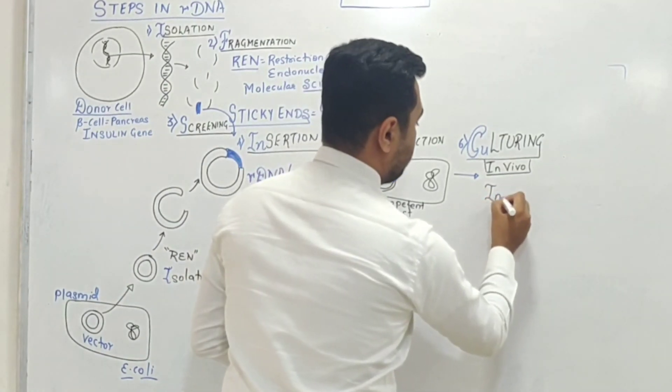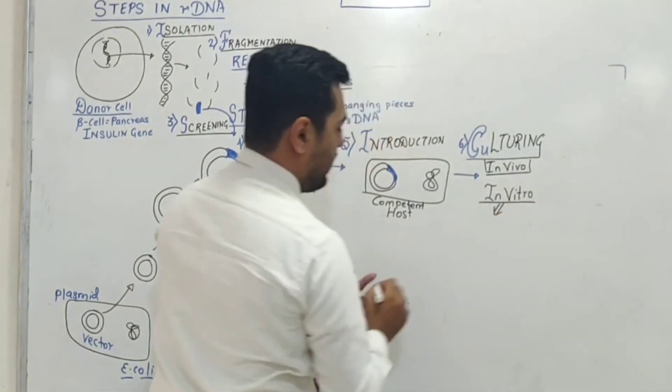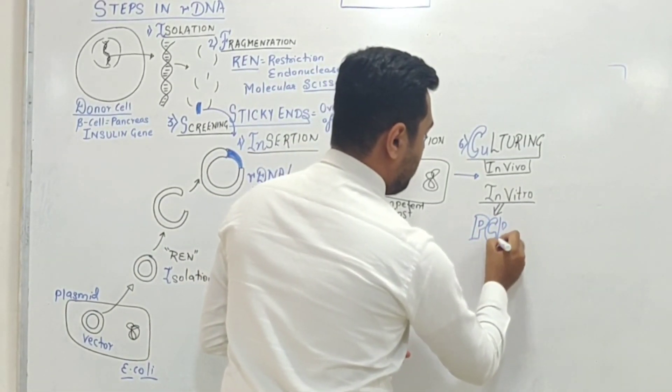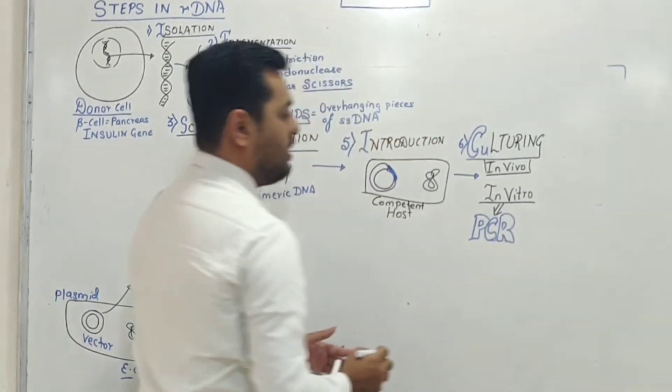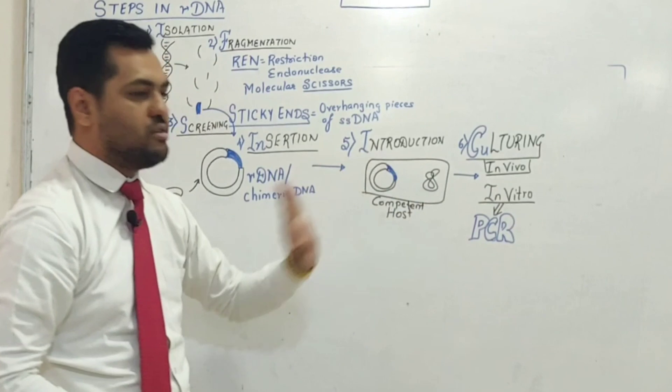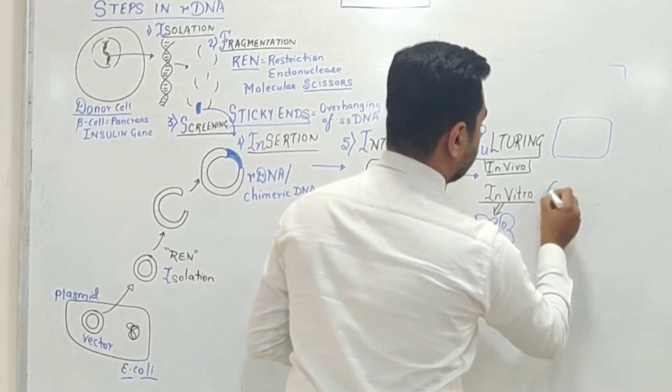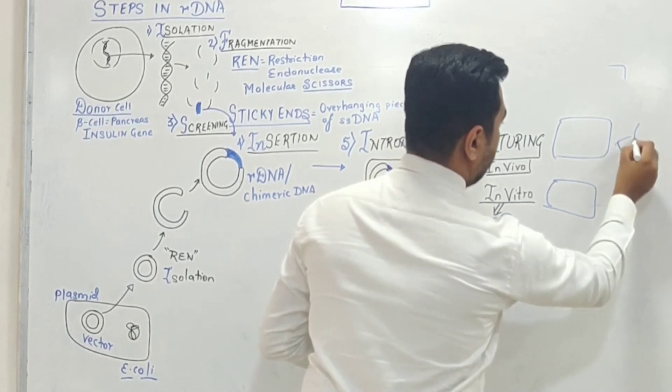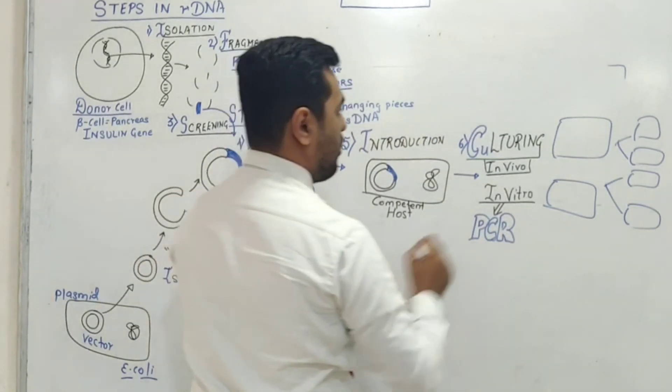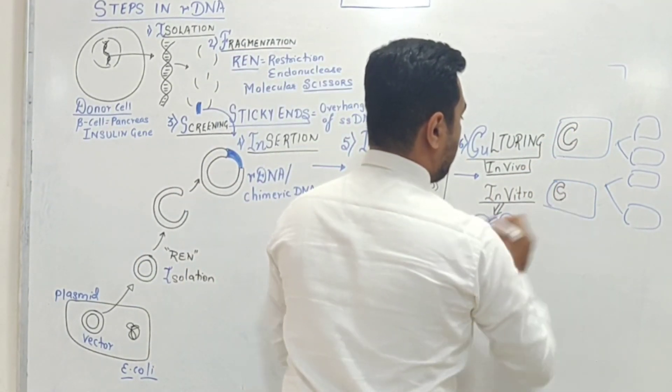We can do this in vivo or in vitro. The in vitro technique outcome is PCR - polymerase chain reaction. Culturing can produce multiple copies of bacteria, multiple clones of our desired gene, which means multiple copies.